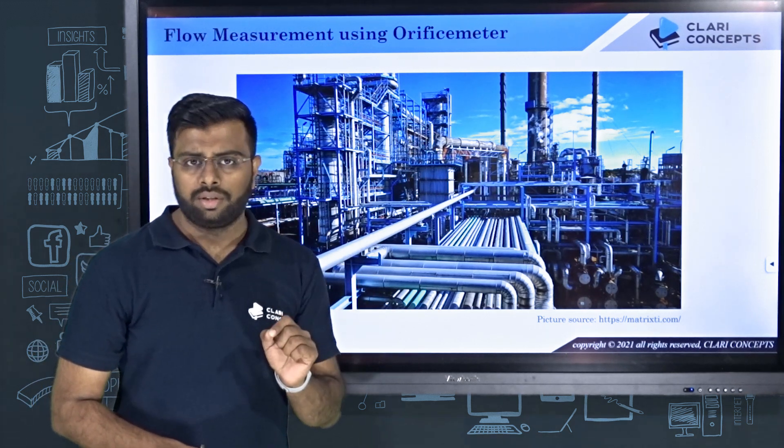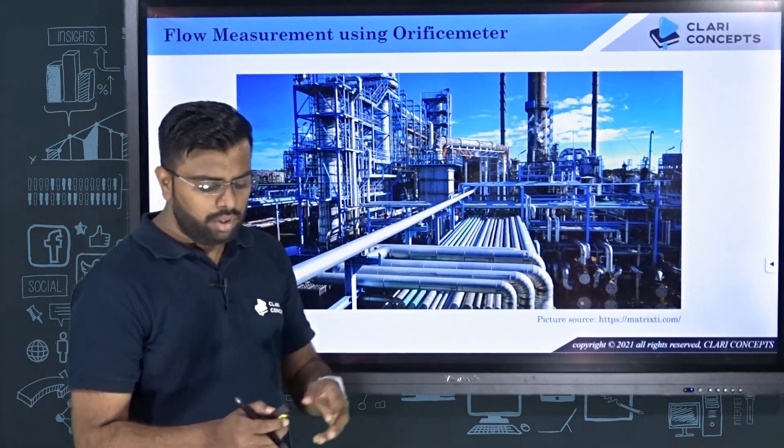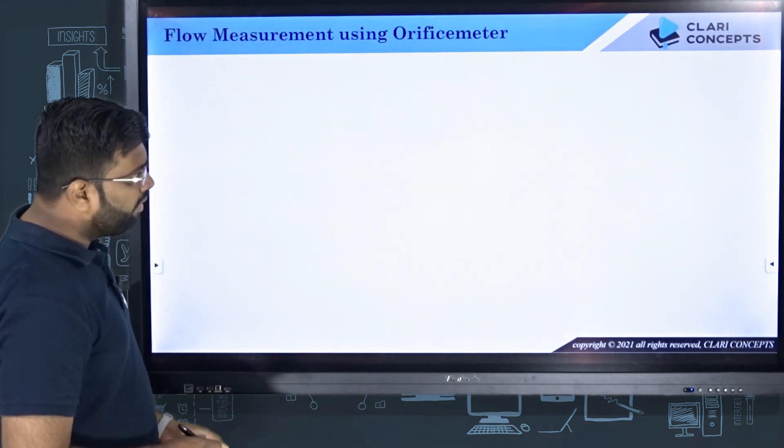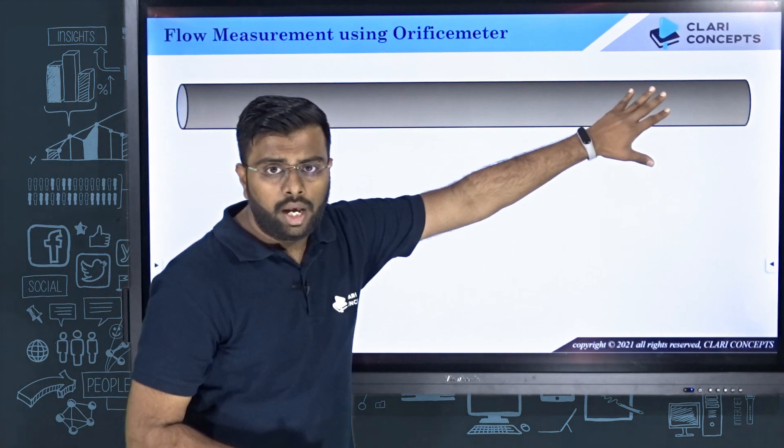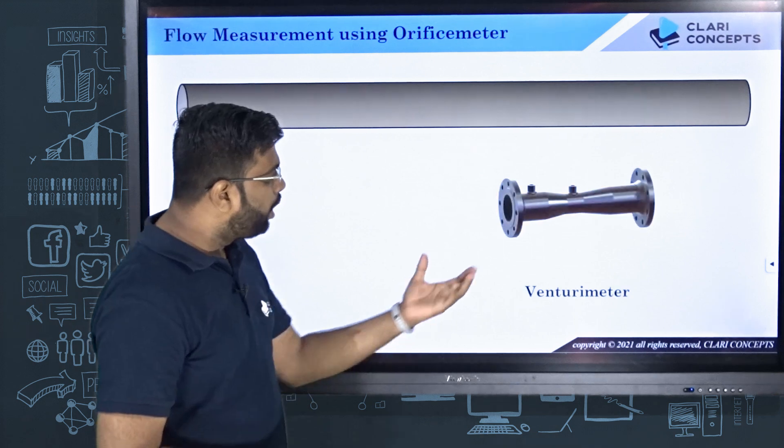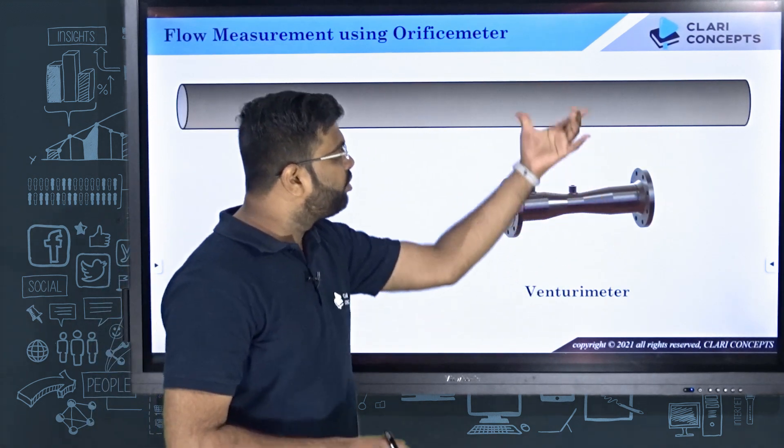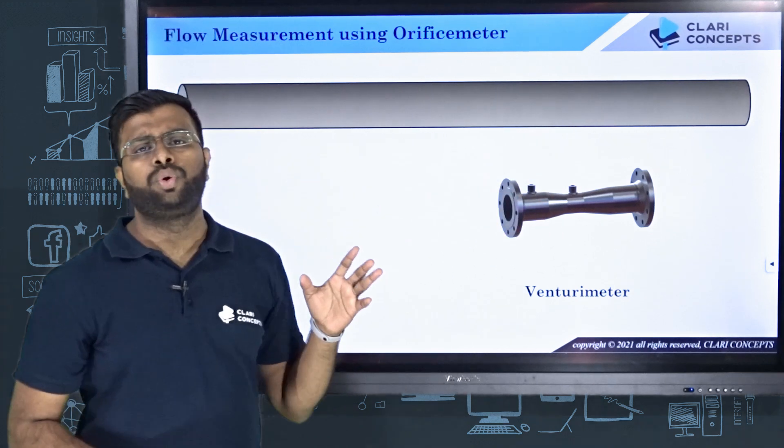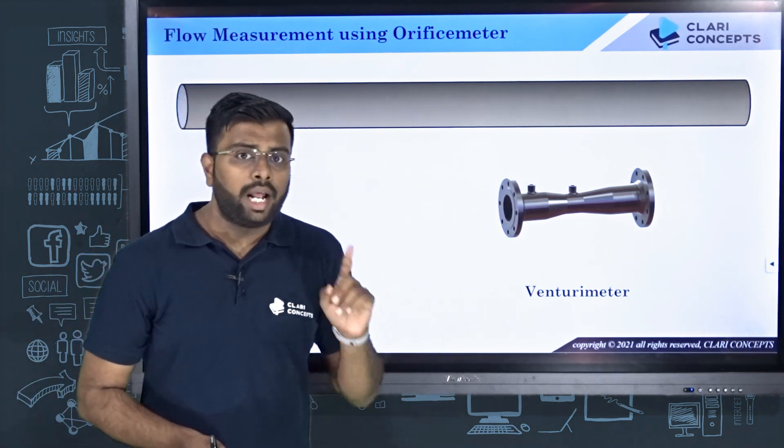We have seen that there are several mechanical devices to measure the flow rate of the fluid flowing through these pipes. One of them which we saw is venturimeter. You have the pipe through which the fluid is flowing, and if you want to calculate the discharge or the flow rate, you can deploy venturimeter. You can simply cut down a small section of the pipe and insert this venturimeter and easily measure the flow rate.